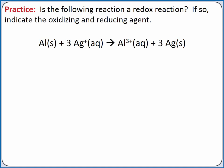Let's practice identifying redox reactions, oxidizing agents, and reducing agents. To determine if this reaction is a redox reaction, we can assign oxidation states to all atoms in the reaction. If this is a redox reaction, one element will have an increase in oxidation state, and another will have a decrease in oxidation state.